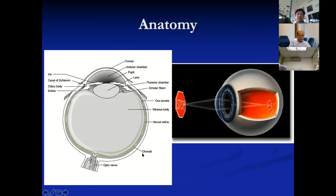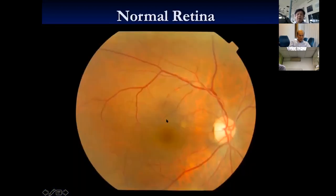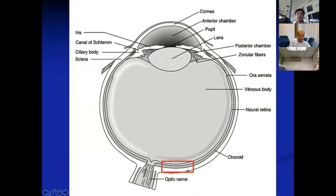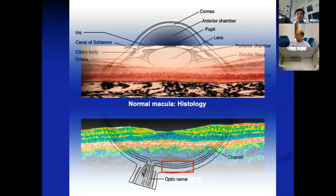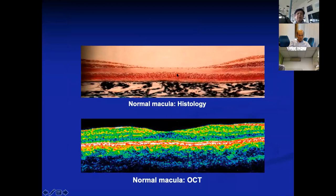This is how a normal retina should look on color photography. The segment we're always interested in is the posterior pole or macular region. OCT gives us a cross-section of this part of the eye. As Dr. Ho mentioned earlier, OCT allows us to see a histological tissue cross-section of the retina. This is an early generation OCT color representation — rather crude, but you can see the structure in cross-section in real time.